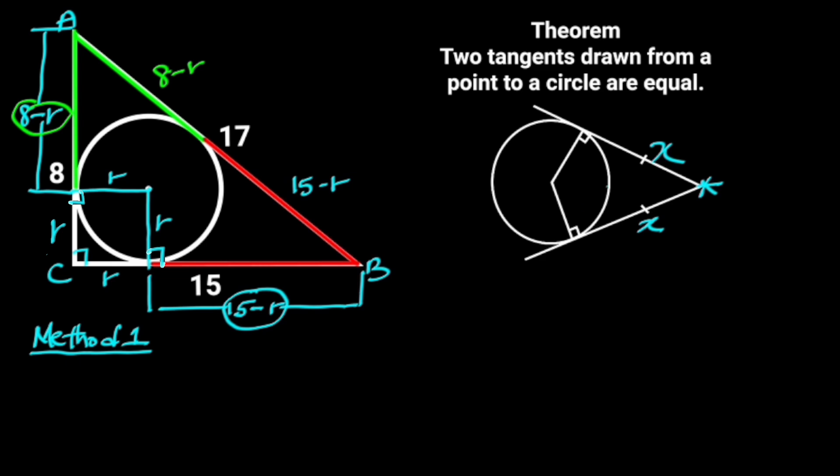Going further, observe that line AB is 8 minus R plus 15 minus R. Since line AB was given as 17 units, we can say that 8 minus R plus 15 minus R is equal to 17.